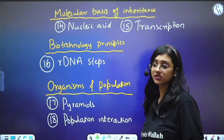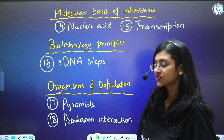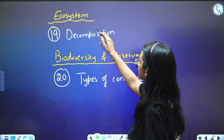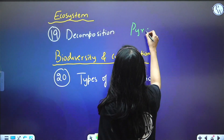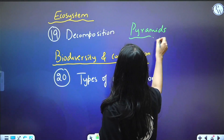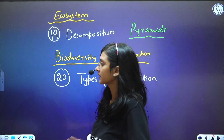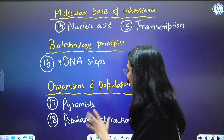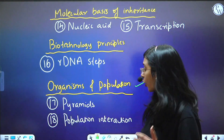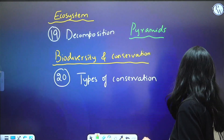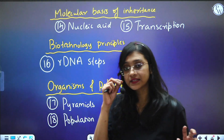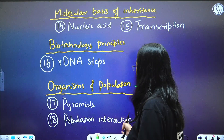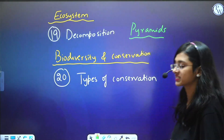From Organisms and Population, and also from the Ecosystem chapter, ecological pyramids are very important. Both chapters feature pyramids, so study them together. Population interactions — mutualism, amensalism, commensalism — are also key topics, with questions coming from these for many years continuously.